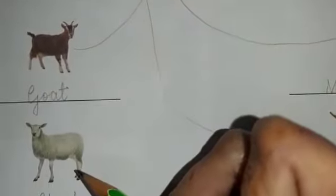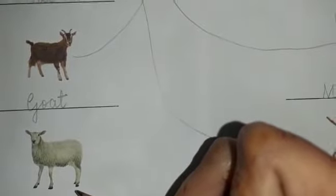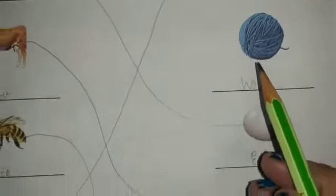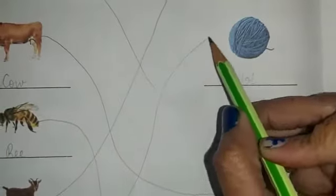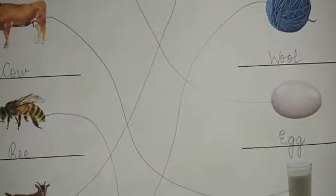And last, this is a sheep. What does sheep give us? Sheep gives us wool. So, we are going to match the picture of sheep with the picture of wool. Okay.